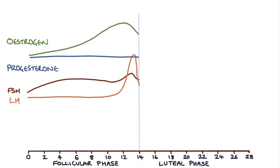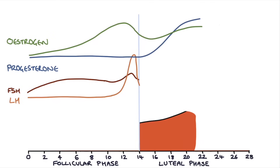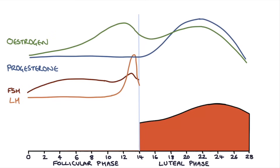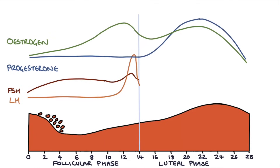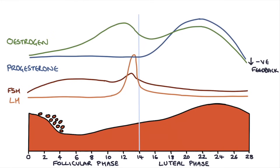Progesterone, and to a lesser extent estrogen, are increasingly produced by the corpus luteum and help to thicken and maintain the endometrium. Unless fertilization occurs, the corpus luteum degenerates and progesterone and estrogen levels drop, resulting in the endometrial lining breaking down and menstruation occurring. The high levels of progesterone and estrogen during this phase cause negative feedback that prevents FSH and LH from being secreted. But as they drop at the end of this phase, this removes the negative feedback on the hypothalamus and pituitary, FSH starts to be secreted, and the cycle restarts all over again.